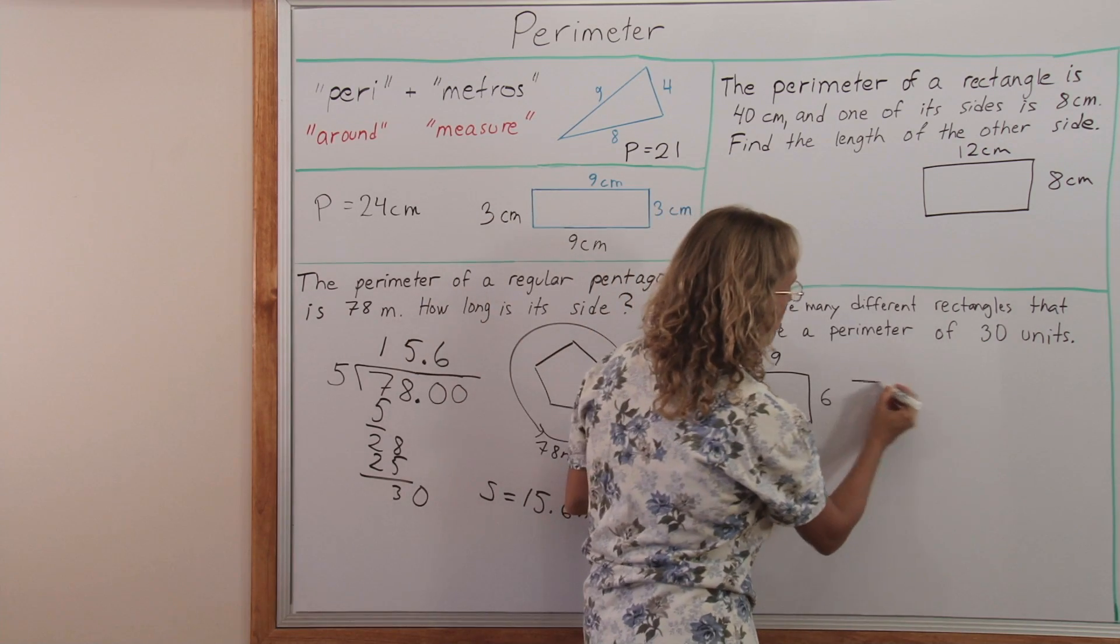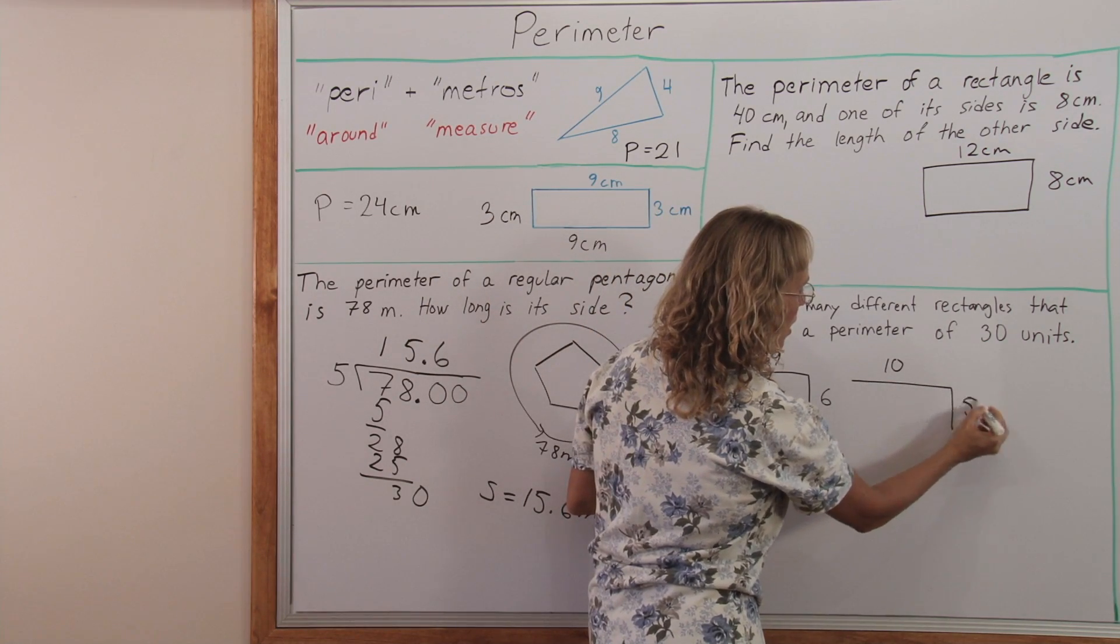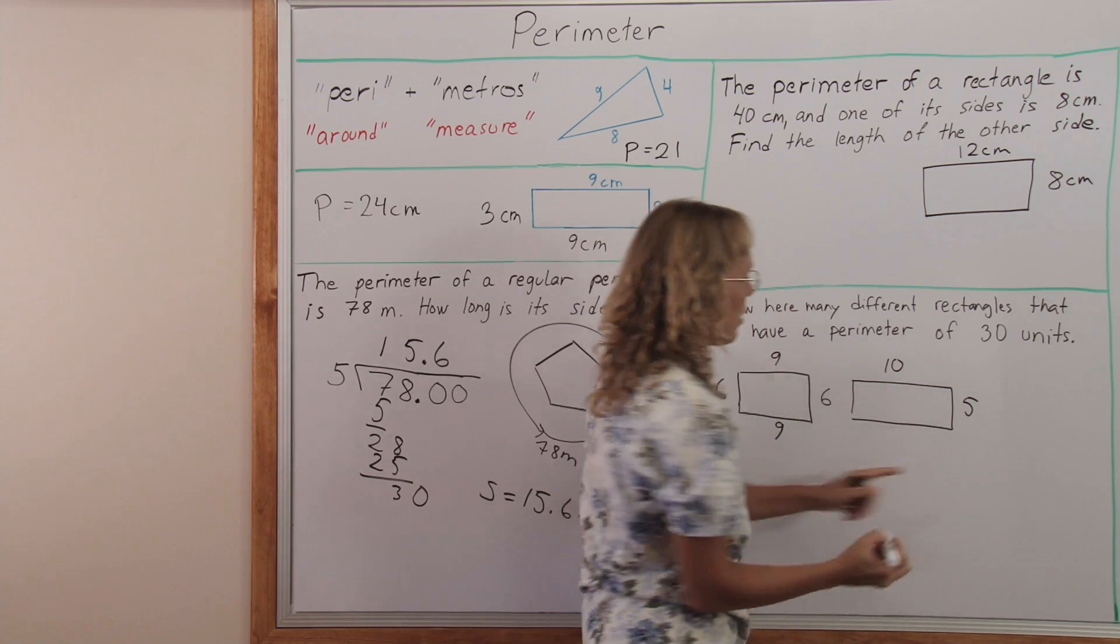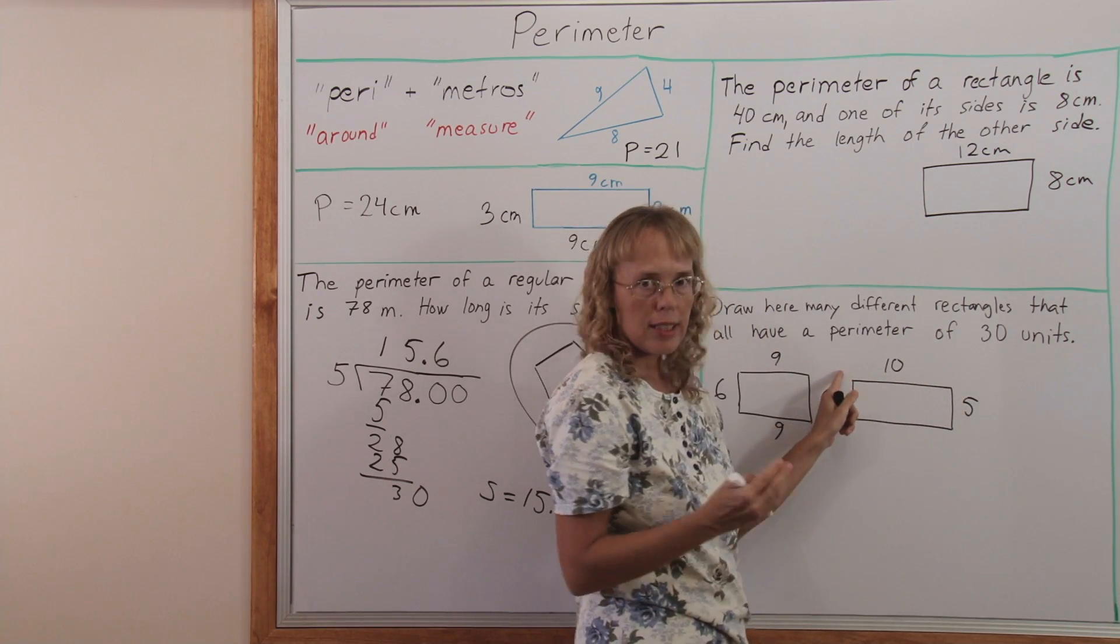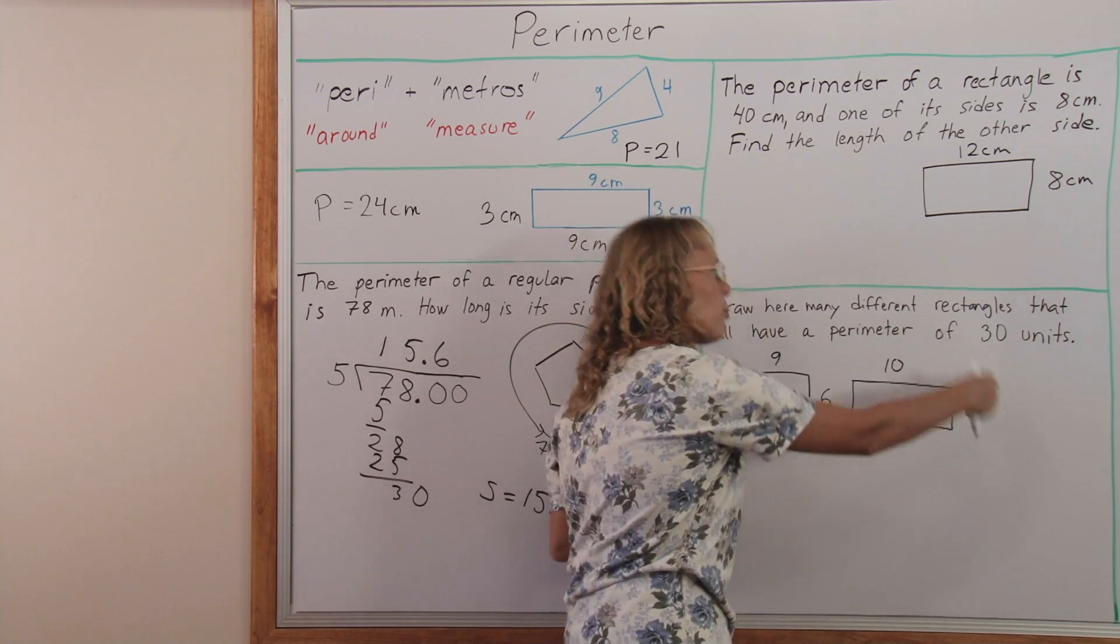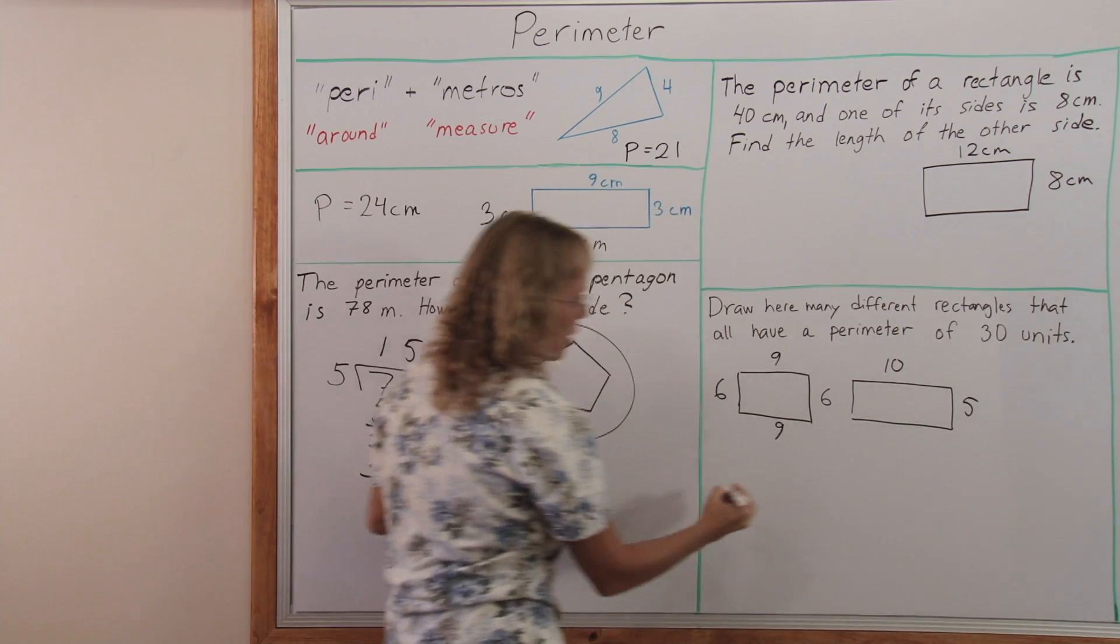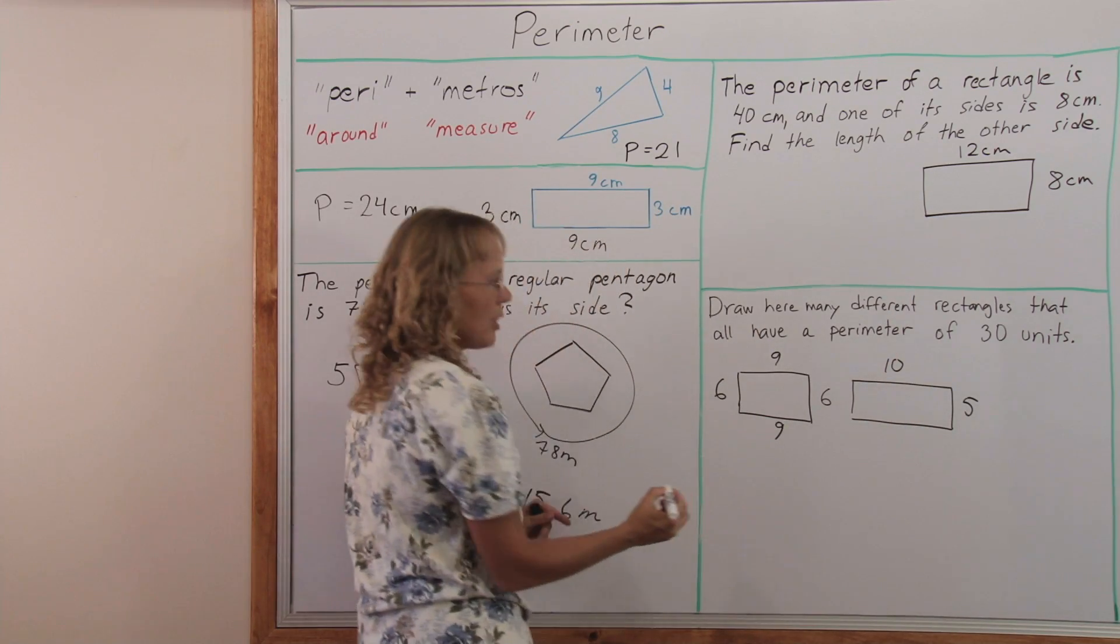And another one, I could make this one 10 and this side 5 and again these two sides add up to 15. So the total perimeter will be 30. And of course there's lots and lots more rectangles as you can see.